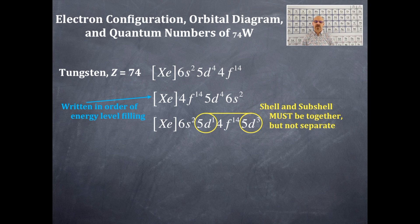These two things here are separated and you cannot separate the shell and subshell. They must be together. You cannot have the 5d separated. This is incorrect. You cannot separate the 5d's. You must keep the 5d's all together even though you're not counting them in that particular order.